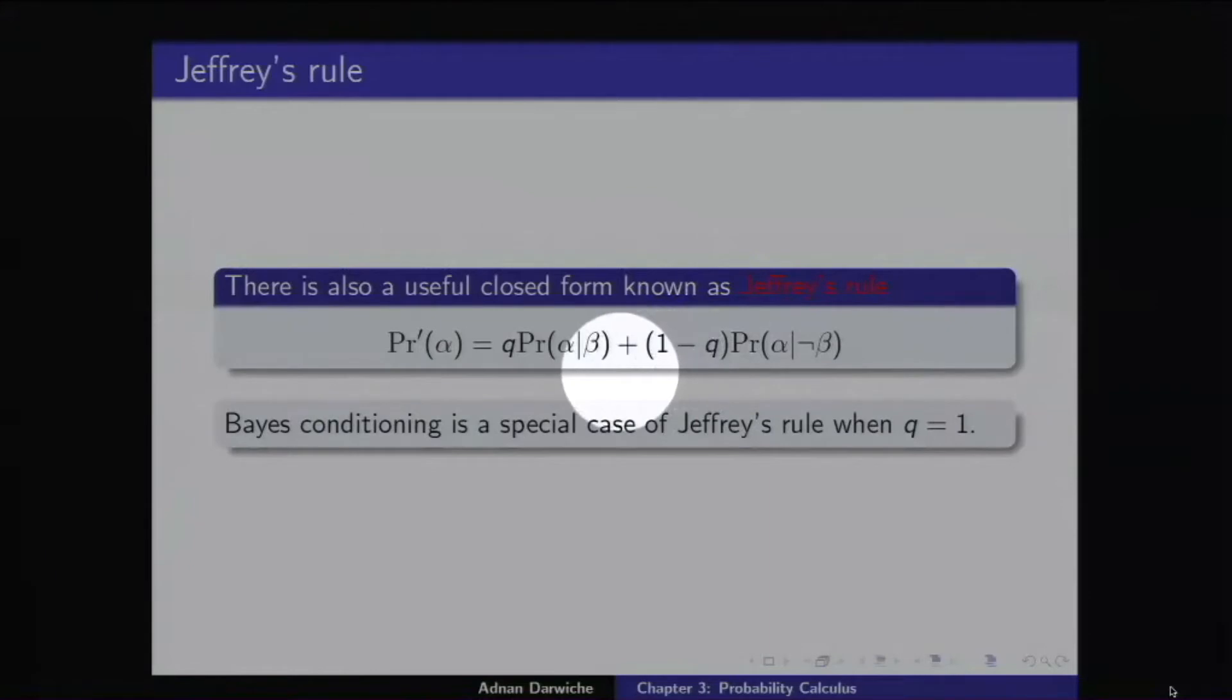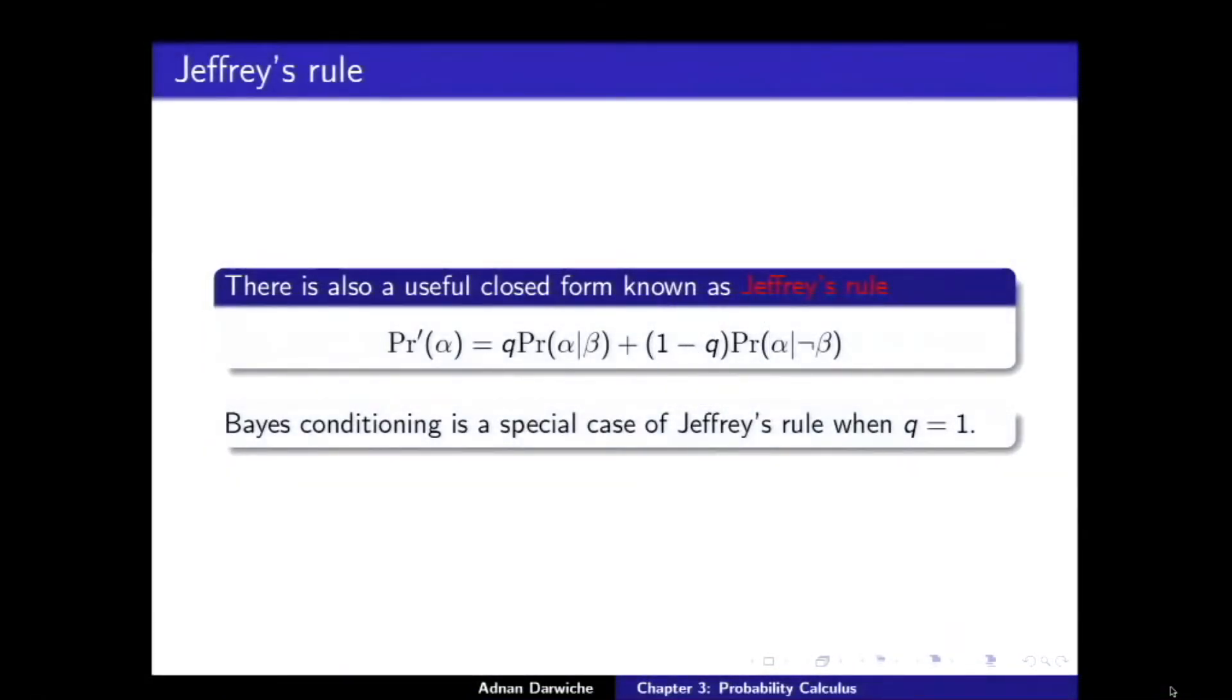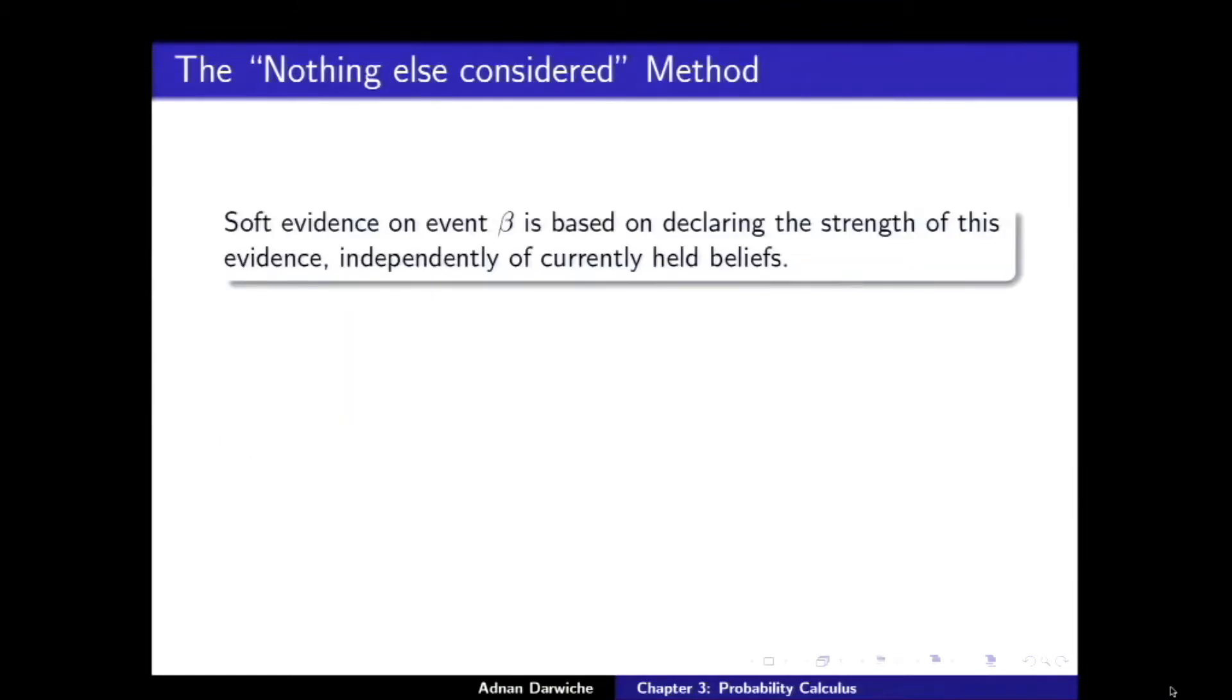So now I specify it by telling you PR prime of beta is Q, that's 85 percent. That's how I communicate constraints. And that means if this guy is Q, then that means not beta is that. Here's the update equation. The new state of belief PR prime of alpha is Q alpha given beta, 1 minus Q, known as Jeffrey's rule. Does that make sense? Can you see that Bayes conditioning is a special case of this? Hard evidence is when Q is 1. When Q is 1, this becomes just probability of alpha given beta. This guy goes away.